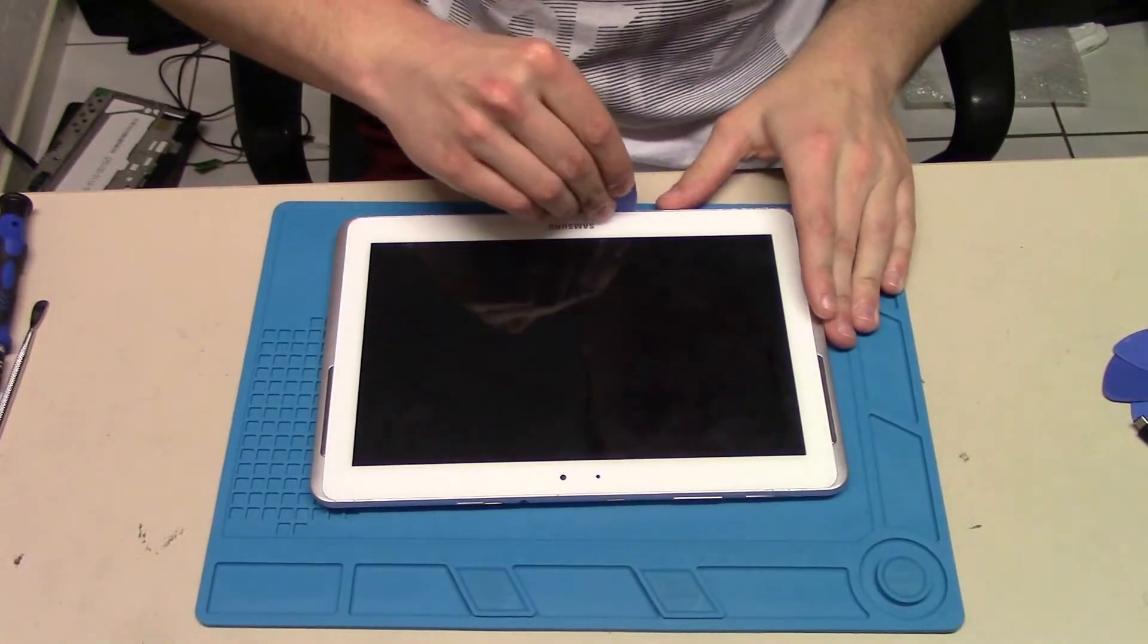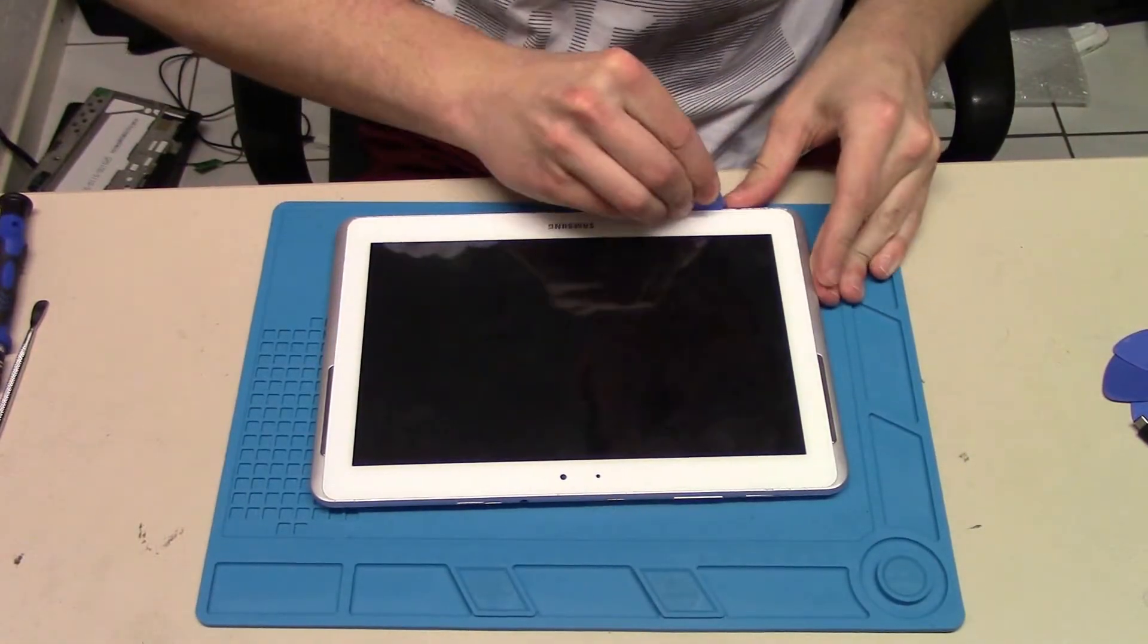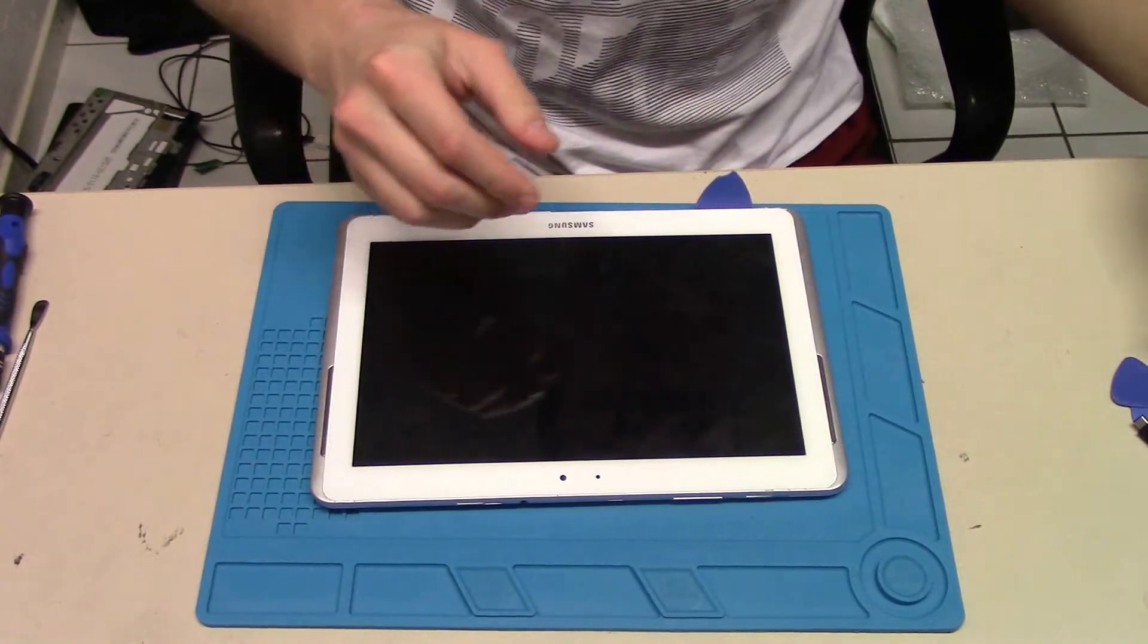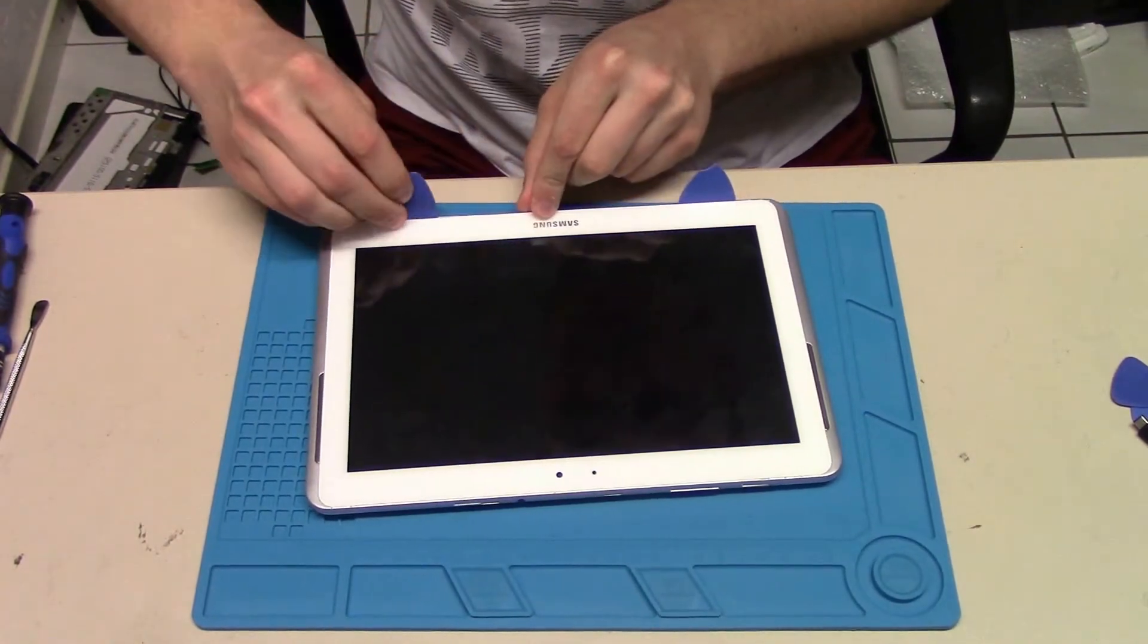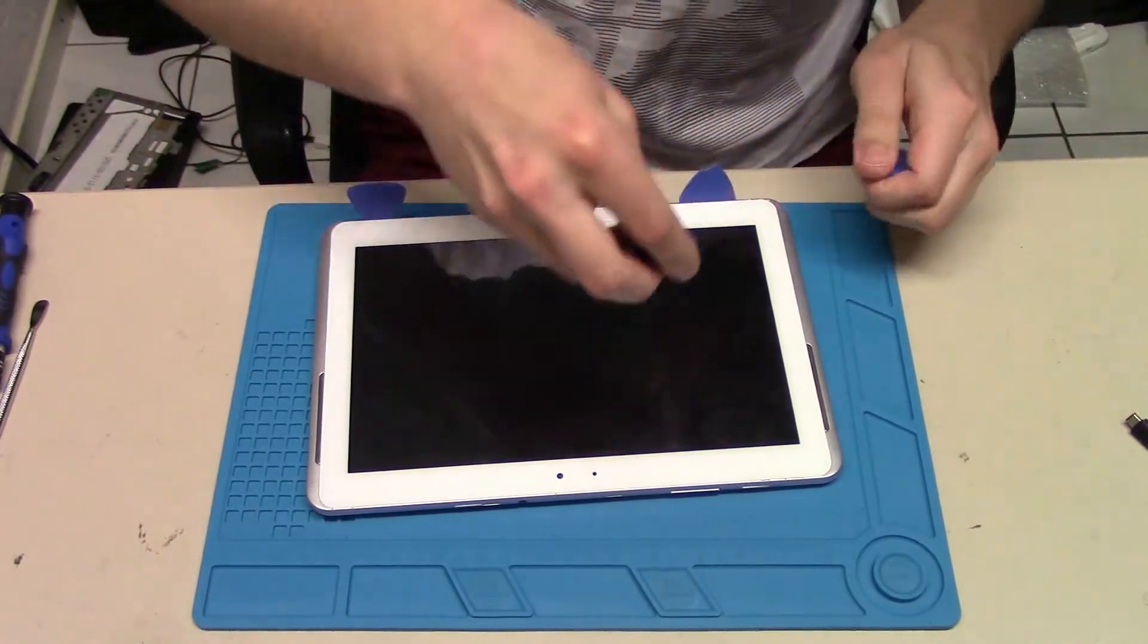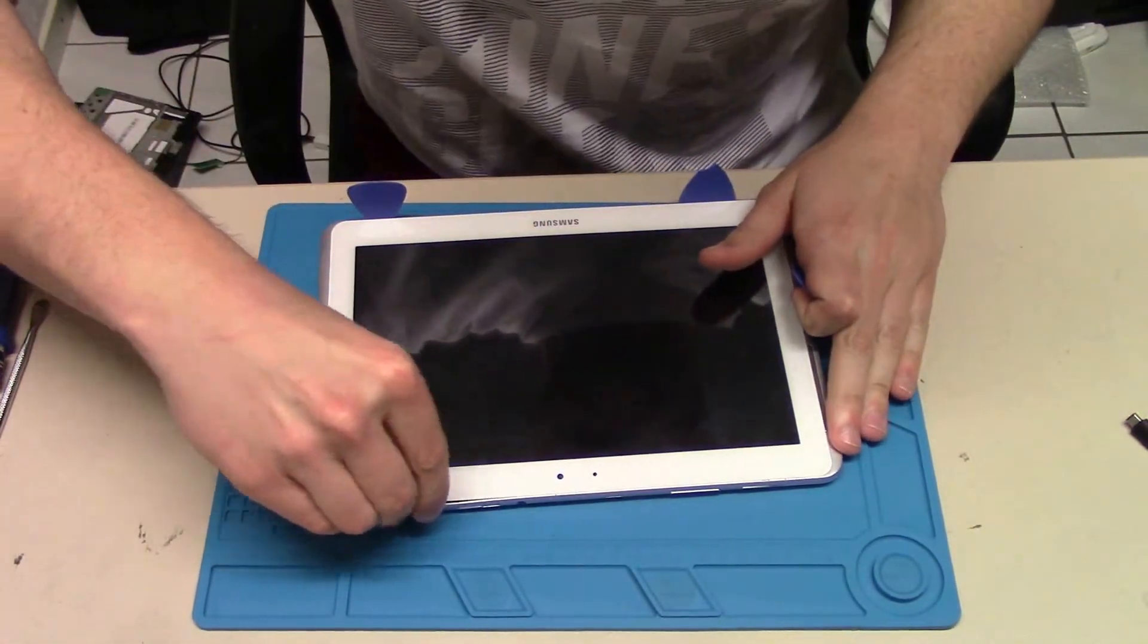Hello guys, today we have here a Samsung Galaxy Tab 2, the GT-P5100, and we want to change the back housing. For this we need only some plastic tools or a metal spudger, and we need to go between the display frame and back housing.